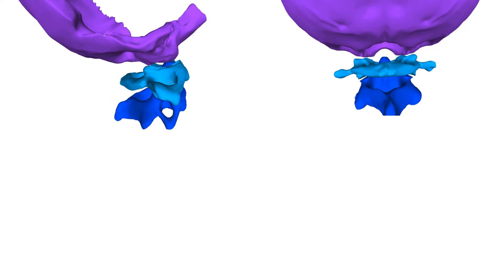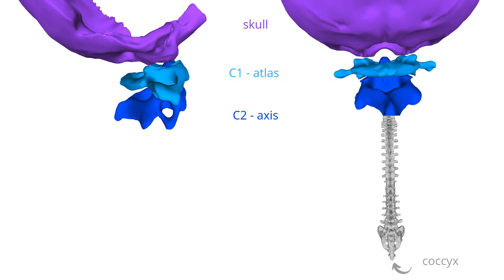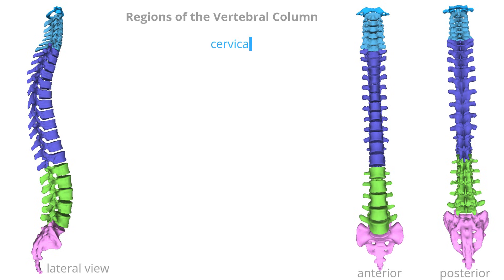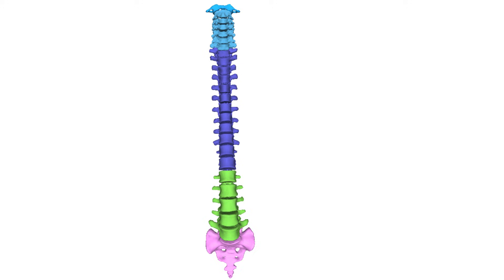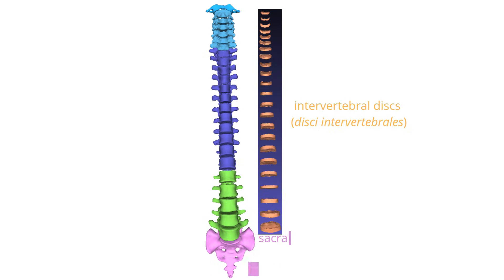The spine extends from the base of the skull to the tip of the coccyx and is divided into five regions: cervical, thoracic, lumbar, sacral, and coccygeal. The vertebrae in the cervical, thoracic, and lumbar regions are separated by intervertebral discs, while the sacral and coccygeal vertebrae are fused.